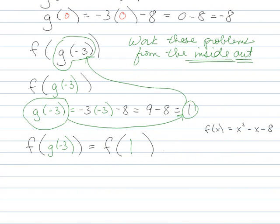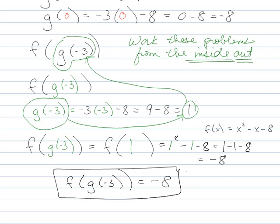So I have f of 1. So everywhere I see an x, I'm going to put a 1. So I have 1 squared minus 1 minus 8. 1 minus 1 minus 8 is negative 8. So f of g of negative 3 is equal to negative 8.